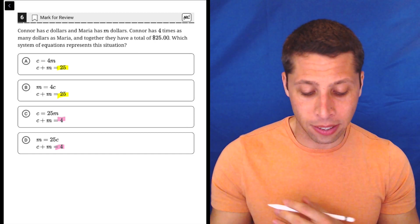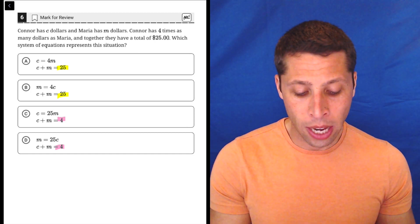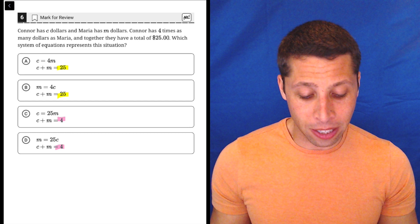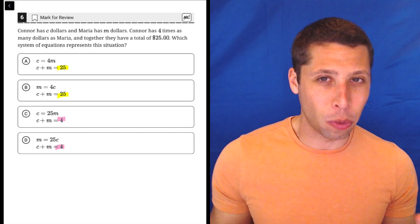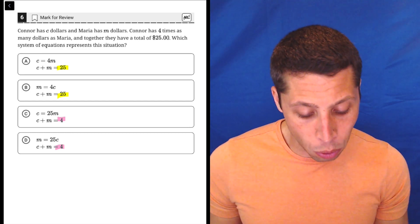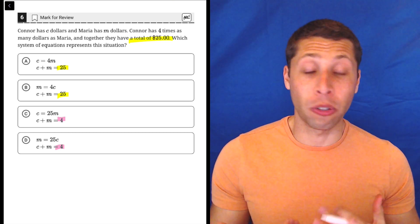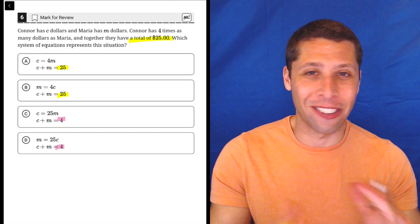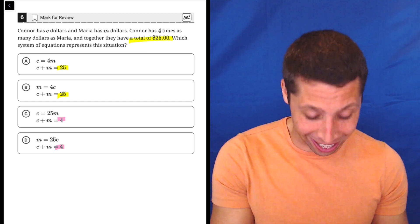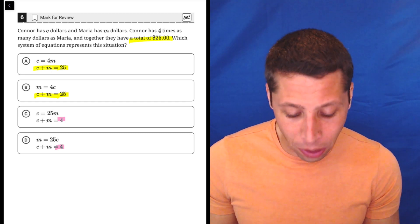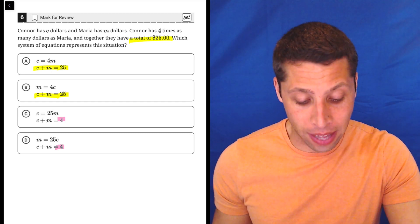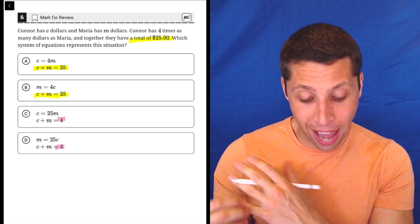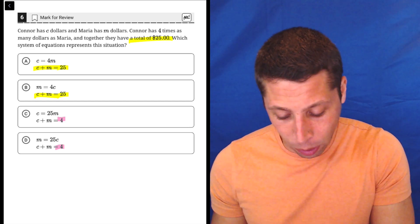Well, they say that Connor is the C dollars and Maria has M dollars and that basically the 4 is how they relate to each other, but 25, that's the total. So total is a word we associate with multiplication, or not with multiplication, sorry, we associate with addition. So there you go. C plus M being 25, that kind of satisfies that. We're taking the amount that Connor has and the amount that Maria has, we're adding them together, and that's 25.